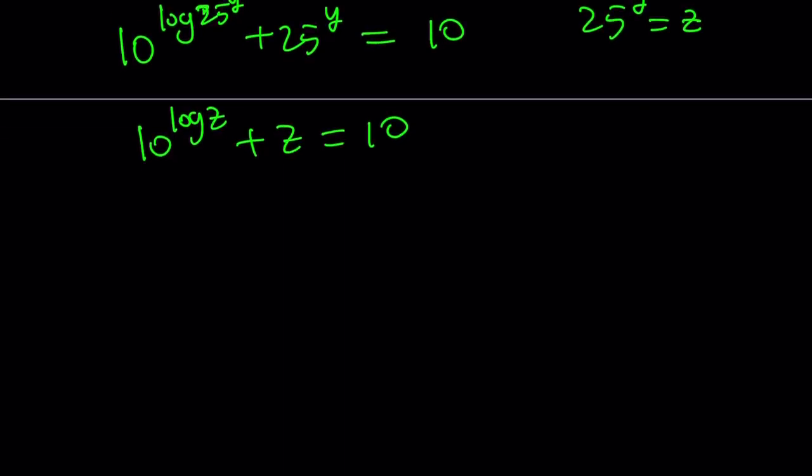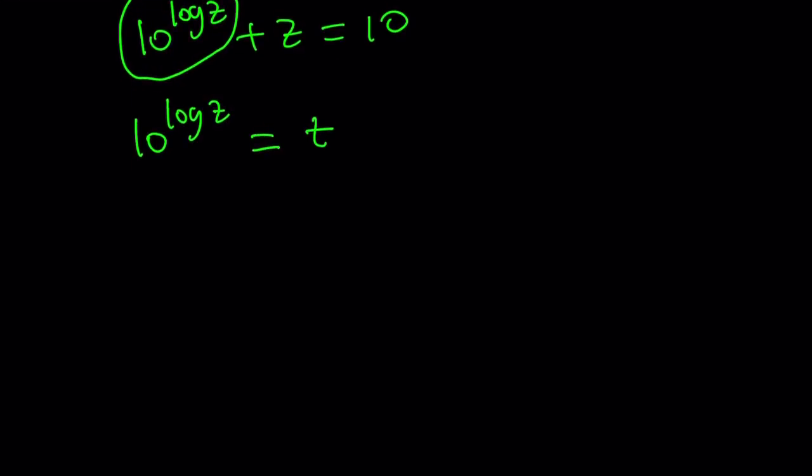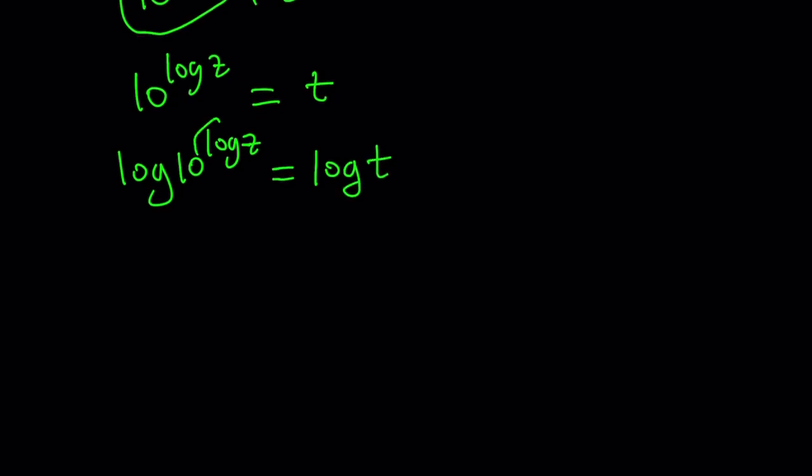So now I have 10 to the power log z plus z equals 10. So that's kind of nice because I have a single expression. I still have a log, but it's not as bad. To solve this, what can I do? Well, maybe we can try to simplify this expression right here. What is 10 to the power log z? So I don't know what it is, so let's call that t. How am I going to find out what this is? To understand, the best way to do it is by logging both sides. And now I know this property. You can move it to the front. That just becomes log z times log 10 equals log t. And log 10 is base 10, so it's just going to be 1 by definition.